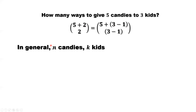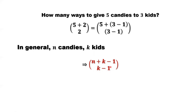In general, if we have N candies and we want to give them to K kids, how many ways? That's the number of candies plus the number of sticks, where the number of sticks needed to divide N candies into K groups is K minus one. So we pick K minus one seats for K minus one sticks. This is the general formula: C(N + K − 1, K − 1). If you know this formula, next time when you see a similar problem, in less than one minute you should find the answer.